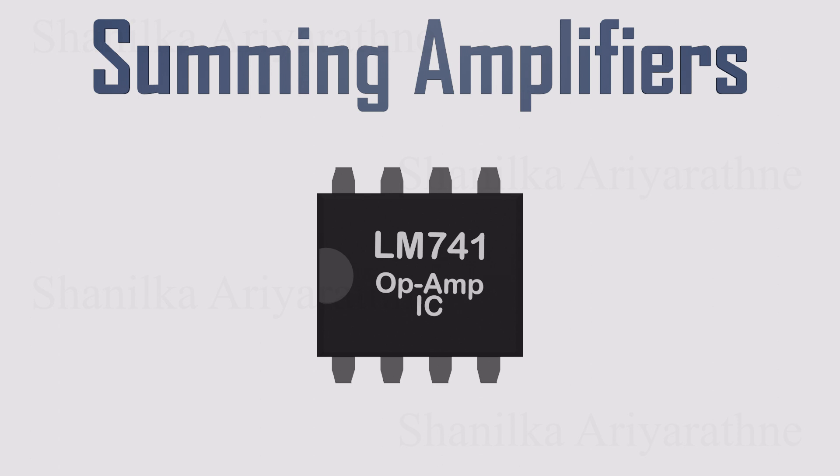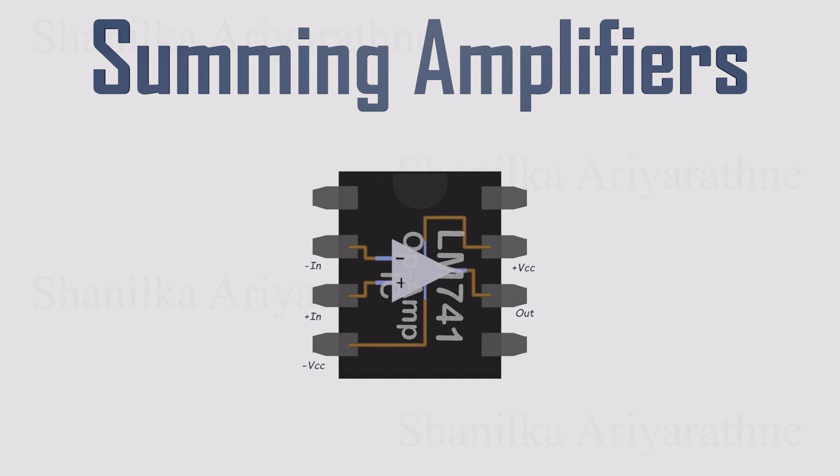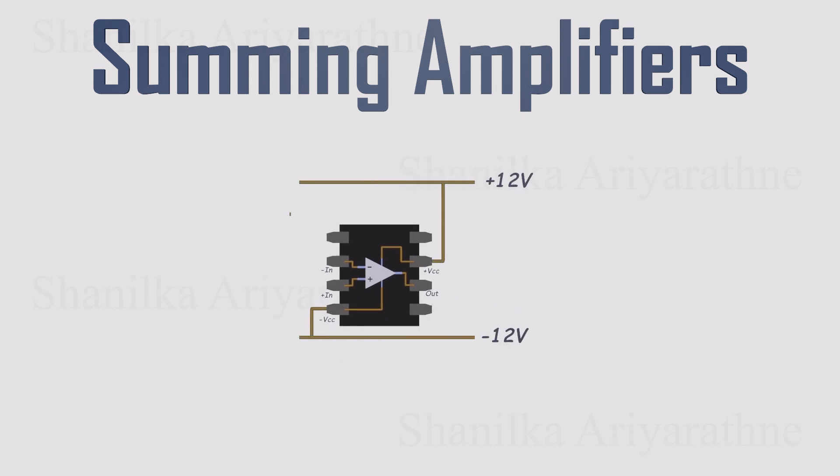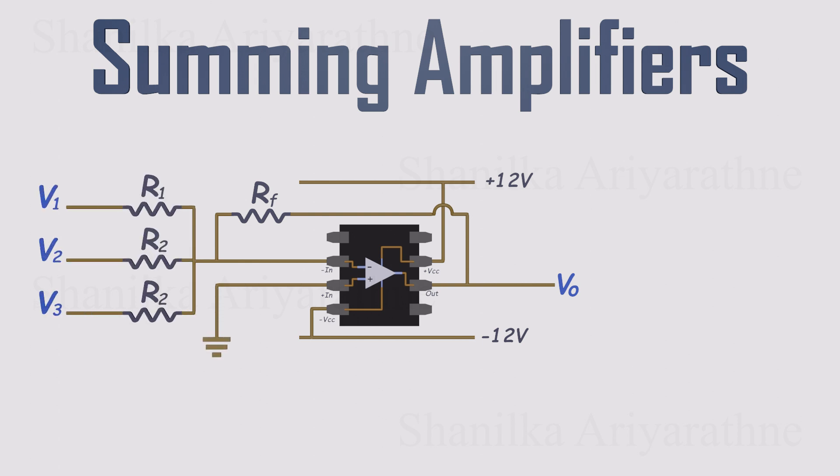All you need is an op amp chip. Power it up, connect a feedback resistor from the output to the inverting input, and tie the non-inverting input to ground. Next, feed each signal you want to add into the inverting input through its own resistor. That's the whole circuit. The output voltage ends up being a weighted sum of the inputs.